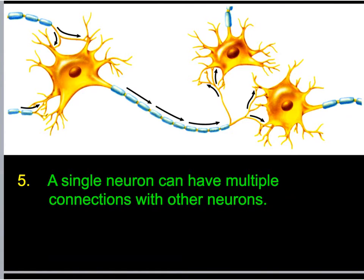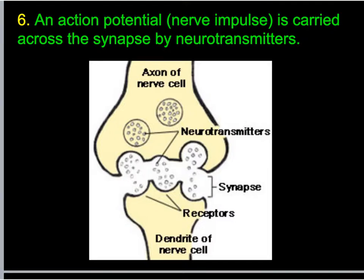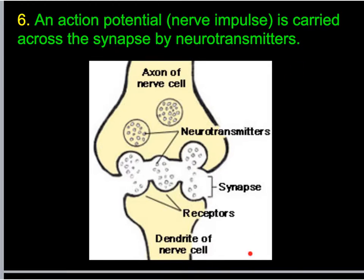An action potential is carried across the synapse by the neurotransmitter. You should have this picture on your study guide — add any labels that are missing. It's a simplified picture showing the axon of one nerve, the axon endings, vesicles of the neurotransmitters fusing and releasing across the synapse, attaching to receptors on the dendrite of the next nerve cell — and you might draw arrows to indicate the electrical signal traveling down each neuron.